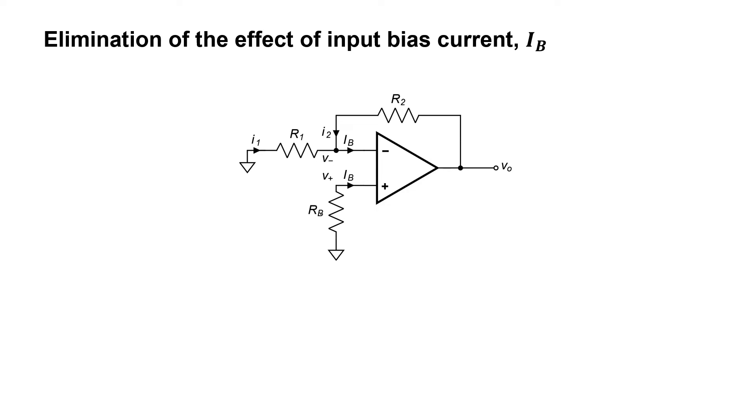Let's get started here with the derivation. I've included the resistor RB here in the circuit diagram, and I've labeled the bias current I sub B. I've labeled the current I sub 1 going through resistor R1, and I sub 2 going through resistor R2. I've labeled the voltage here V sub minus, and I'm labeling the voltage here at this pin V sub plus.